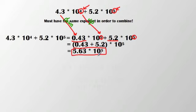Now what I could have done is instead of changing this 10 to the 4th to 10 to the 5th, I could have changed this 10 to the 5th to 10 to the 4th. What would have happened in that case is that I would have moved this value down.